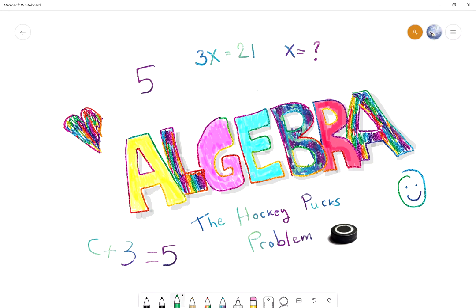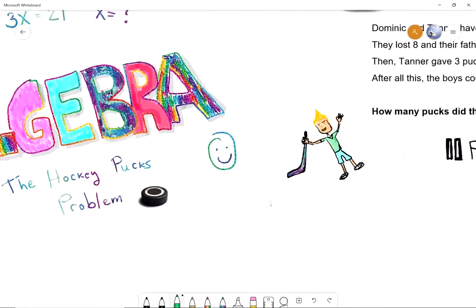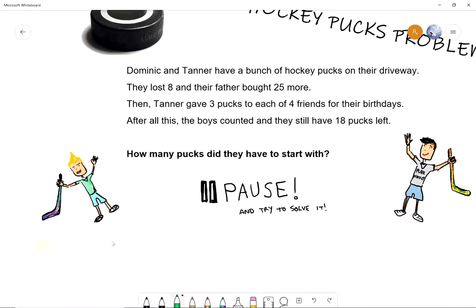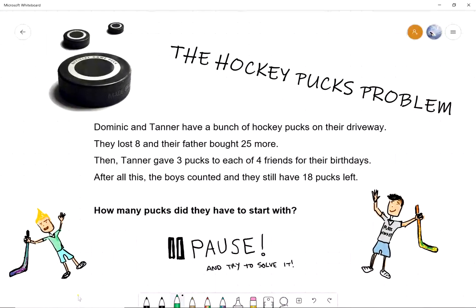Okay, so we are going to talk about a problem that we call the Hockey Pucks Problem. Let's introduce the problem and maybe Dominic can read the problem for us. Dominic and Tanner have a bunch of hockey pucks on their driveway. They lost 8 and their father bought 25 more. Then Tanner gave 3 pucks to each of 4 friends for their birthdays.